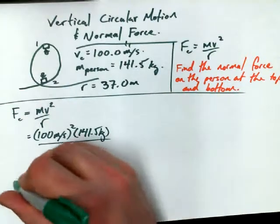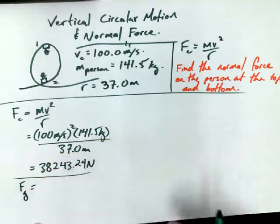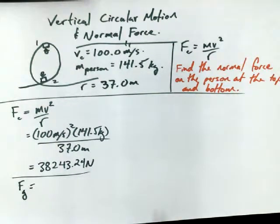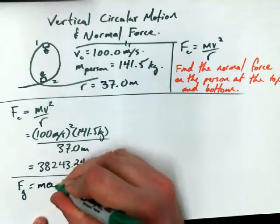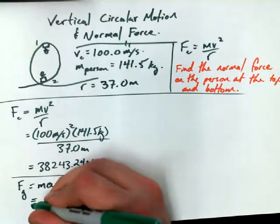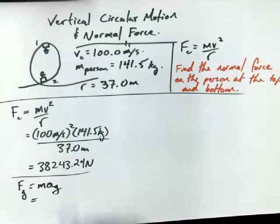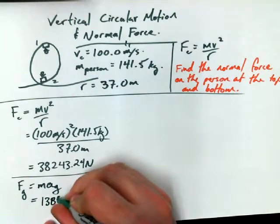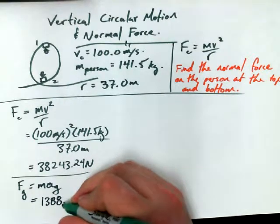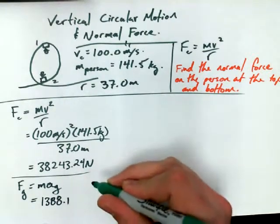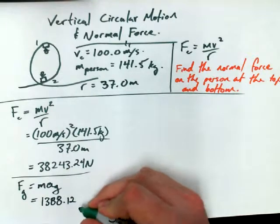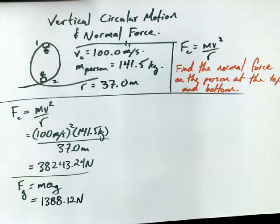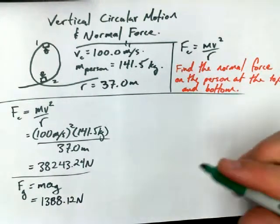And we might as well, as we've done before, find the Fg, since we know this person's mass. And I can't quite do this one in my head. So 141.5 kilograms is the mass times acceleration of 9.81 meters per second squared. 1,388.115. Okay, I'm going to go with 1,2. Keep the same decimal places. 1,2 newtons. Because it's way beyond the number of sig figs we need anyway in the end.